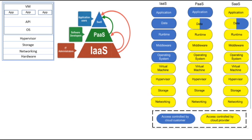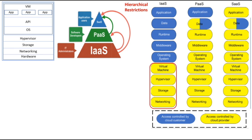These are the same three service models — IaaS, PaaS, and SaaS. Here you can see that certain components are highlighted in yellow and certain are highlighted in blue. The components highlighted in blue are controlled by the cloud customer in their respective service model, and the components highlighted in yellow are controlled only by the cloud service provider.